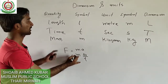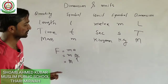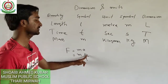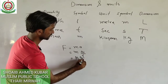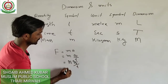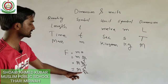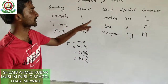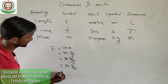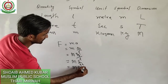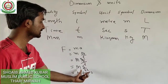The mass dimension is capital M. Velocity is a derived quantity — velocity equals displacement divided by time, so dimension of velocity is L divided by T. Acceleration is velocity divided by time, so dimension is L over T squared. Therefore, force dimension is M times L over T squared, written as MLT⁻².